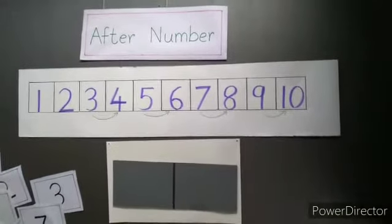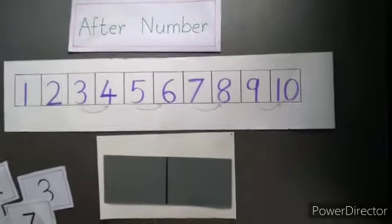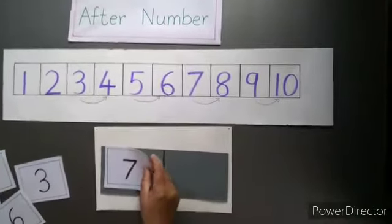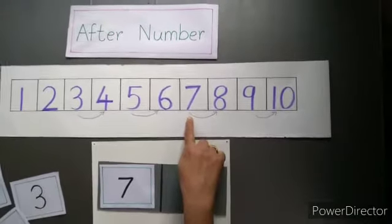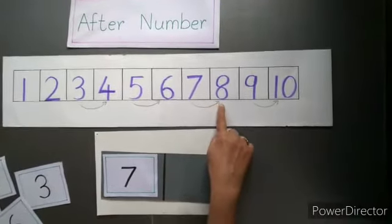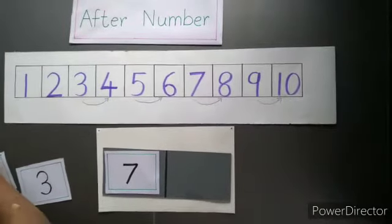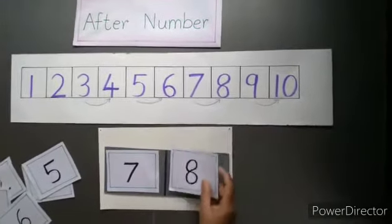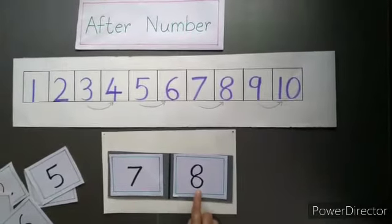Now we will do an after number activity. You can see the number line here and some numbers. I will take number 7. Which number comes after number 7? Number 7 is here, and to get the after number, I have to move forward — I have to do forward counting. So after 7, it is number 8. Here we can say: after 7, it is number 8.